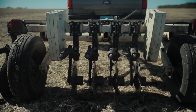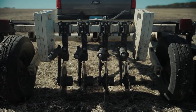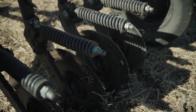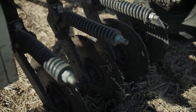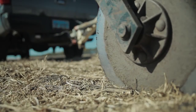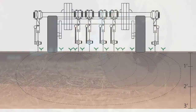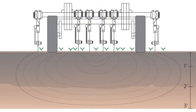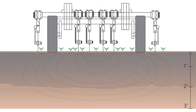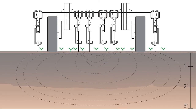Here's how the Veris cart works. In this case, we're looking at a Veris 3100, which is pulled across a field behind a pickup. The coulters are set at about two inches below the soil surface. One set of coulters sends a known electrical pulse into the soil, and that pulse is transmitted through the soil water and detected by the other set of coulters. Soil water containing soluble salts conducts electricity better than water without salts.